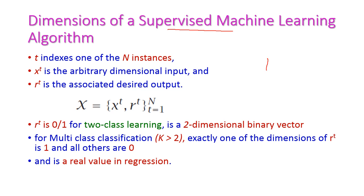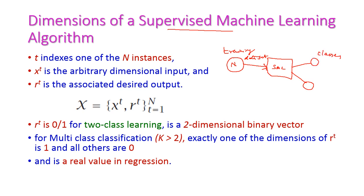First we will recall what is supervised machine learning. For this model we give n number of input samples — also called the training data set — to the supervised model. The output of the supervised model will be the classes: c1, c2, and so on up to cn, where the samples are divided into corresponding classes.